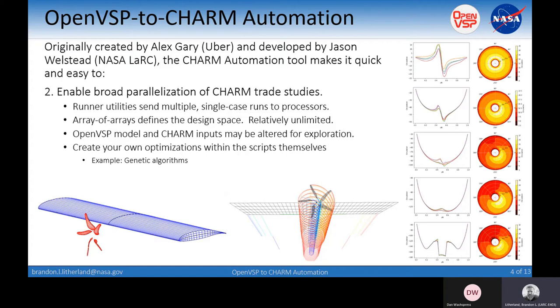Because we're running through the API, all of these OpenVSP model and CHARM input parameters are able to be altered in real time from the script. You can change things, sweep them, add them to your parameter sweep. If you want, you can create your own optimizations within these Python scripts, run things like genetic algorithms, and try and iterate on the best version of an aircraft.